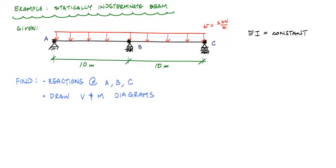Welcome back to some structure-free learning. In this video, we're going to do a problem for a statically indeterminate beam using the method of superposition. We want to calculate the reactions at points A, B, and C, where A is pinned, B is a roller, and C is a roller. We have a uniformly distributed load at 2 kilonewtons per meter. This is called a continuous beam, and we want to calculate the reactions and draw the shear and moment diagram.